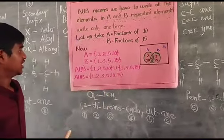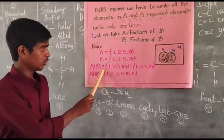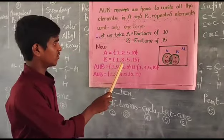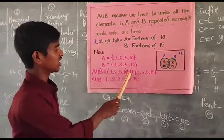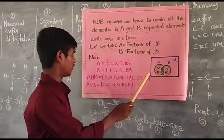Then A Union B is equal to 1, 2, 5, 10, union 1, 3, 5, 15.